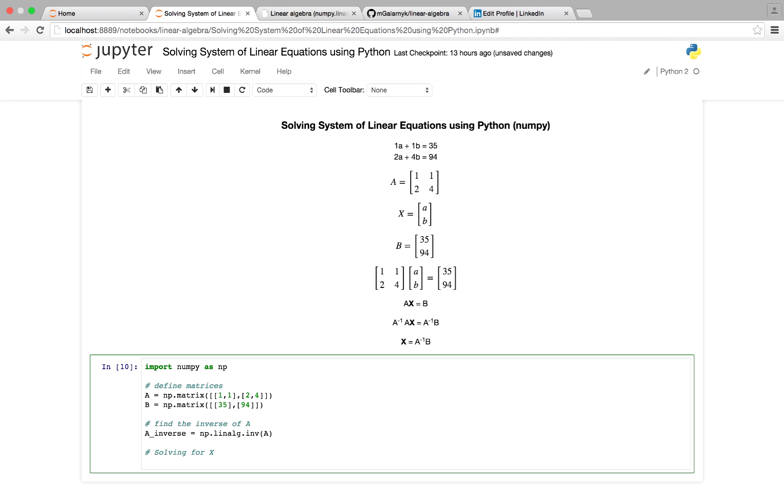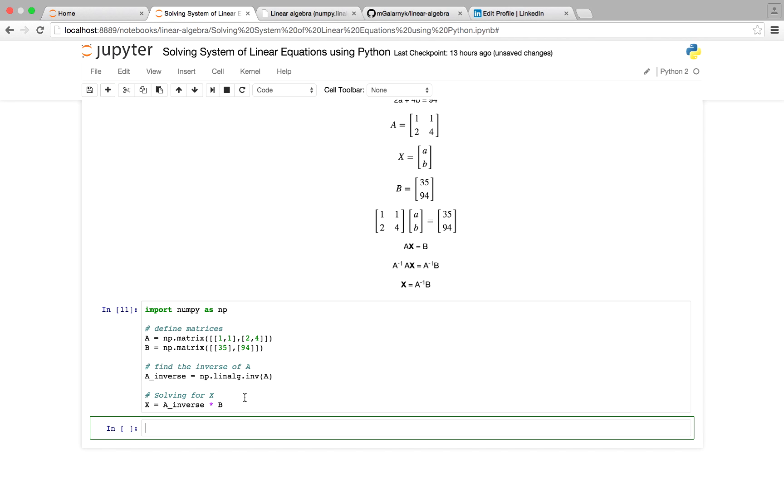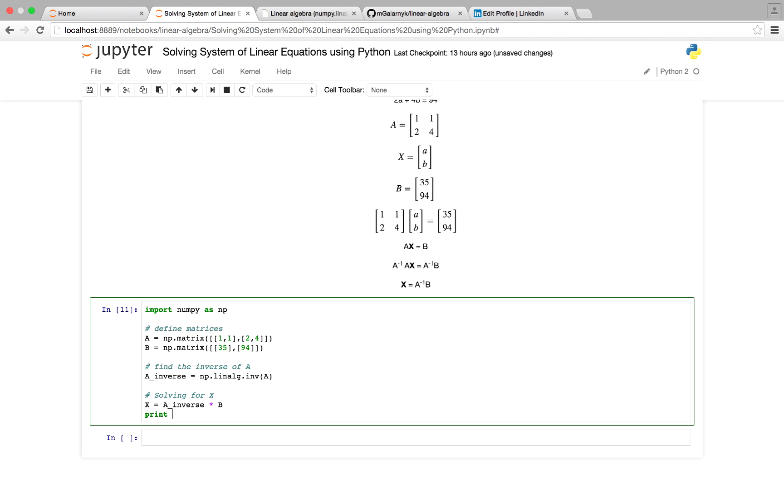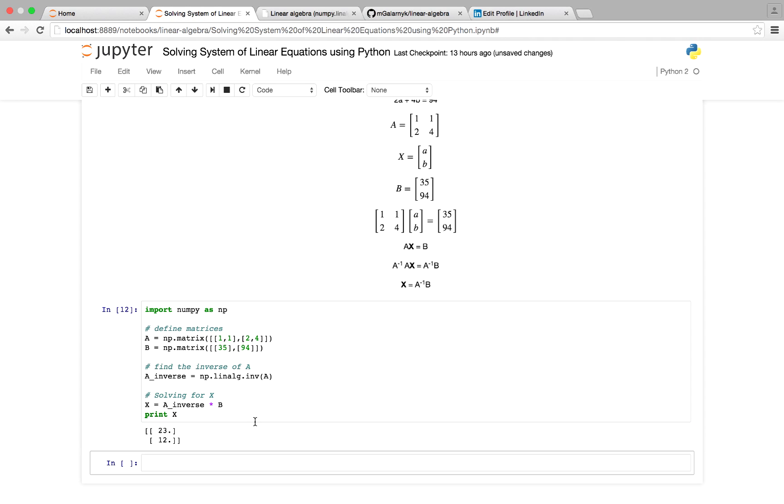And we'll have x equal to A underscore inverse times the matrix B. And this will give us the solution to our problem. And print x. And that's the solution to our problem.